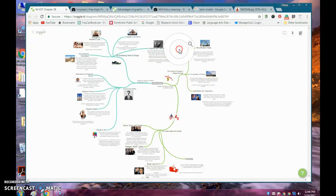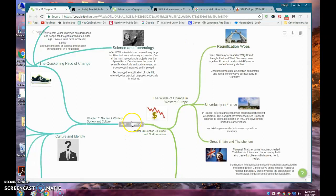I'll go ahead and zoom in here a little bit so we can look at it. You'll notice the major topic was a certain chapter, and then here we're sectioning it off into chapter three, which is the winds of change in Western Europe into reunification, uncertainty in France.